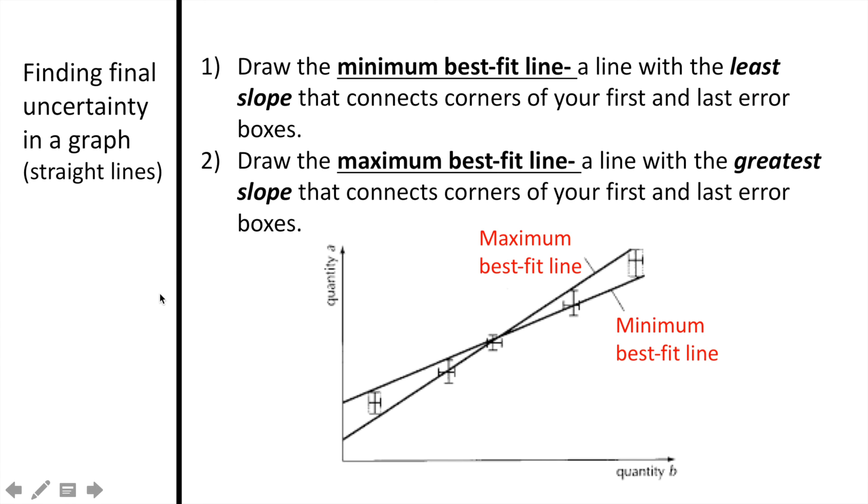You may be asked to find the final uncertainty in a graph for a straight line. The first step is to find the minimum and maximum best fit lines. The minimum best fit line is a line that is drawn from the top of the lower error box to the bottom of the highest error box. This gives you the lowest possible slope. The maximum fit line is drawn from the bottom of the lowest error box to the top of the highest error box. This gives you two lines that visually represent the lowest and the highest slopes of the trend.